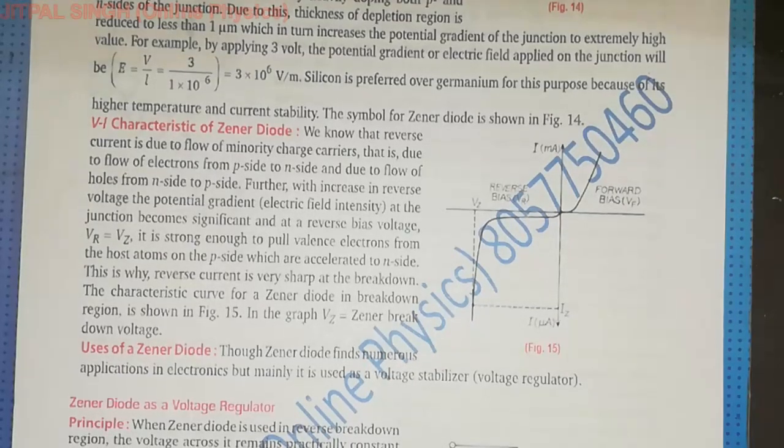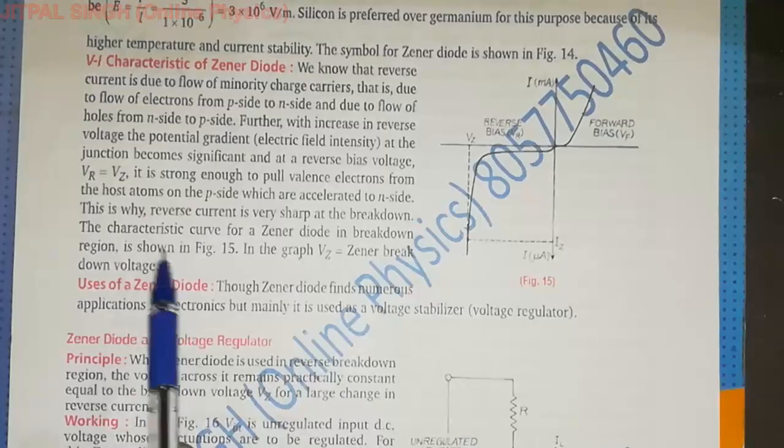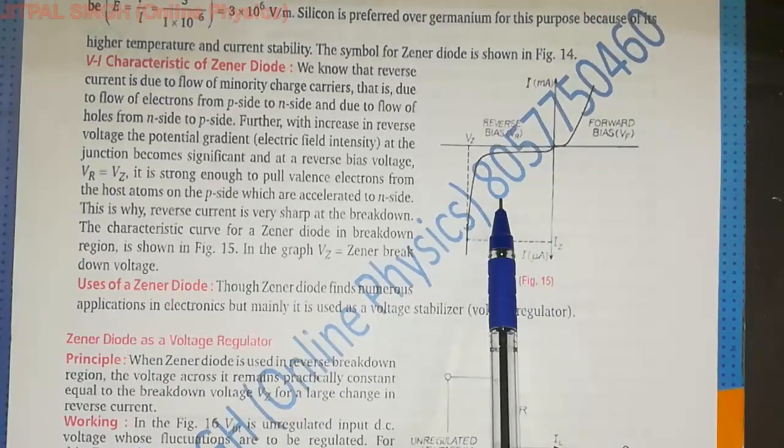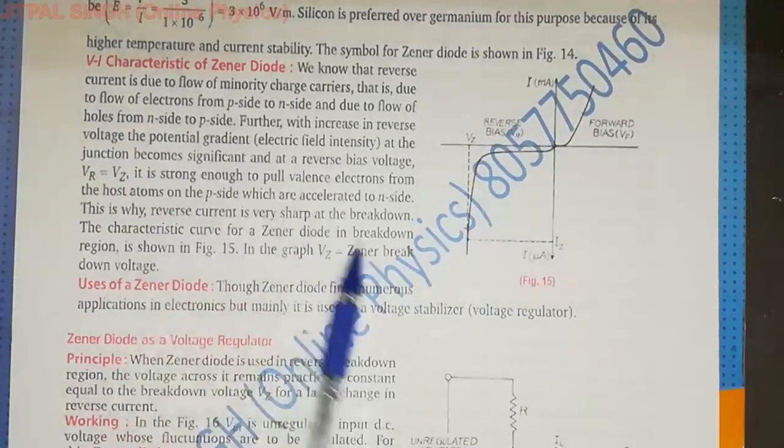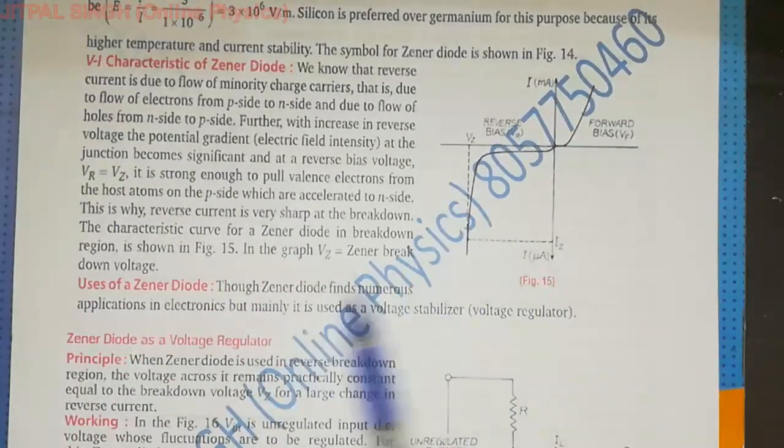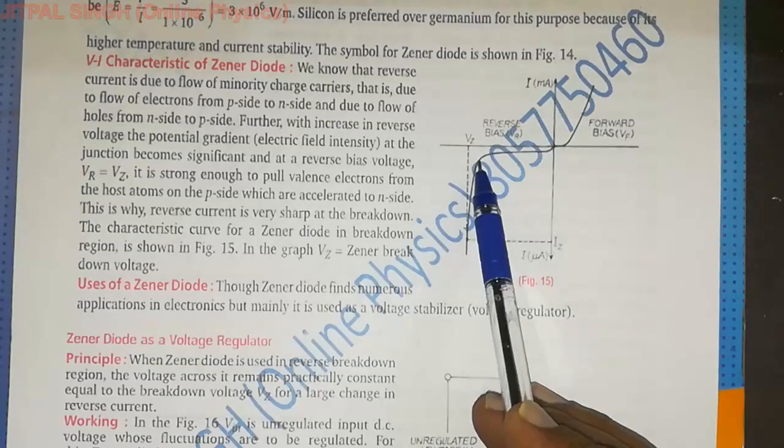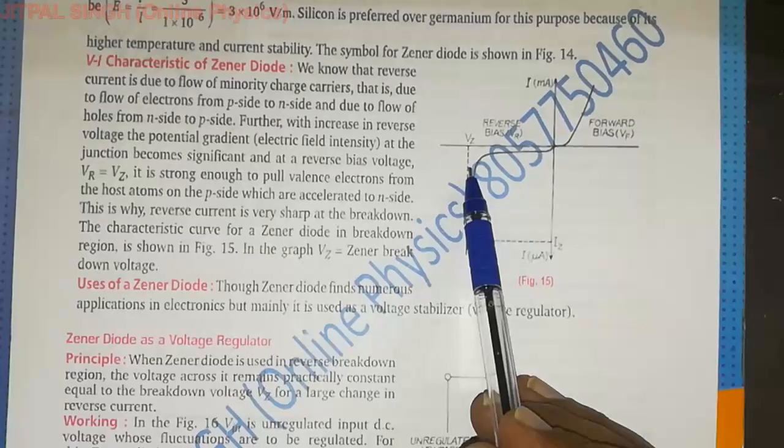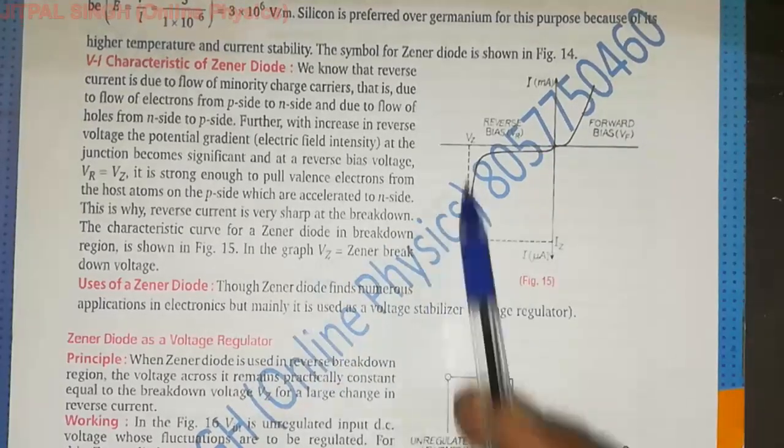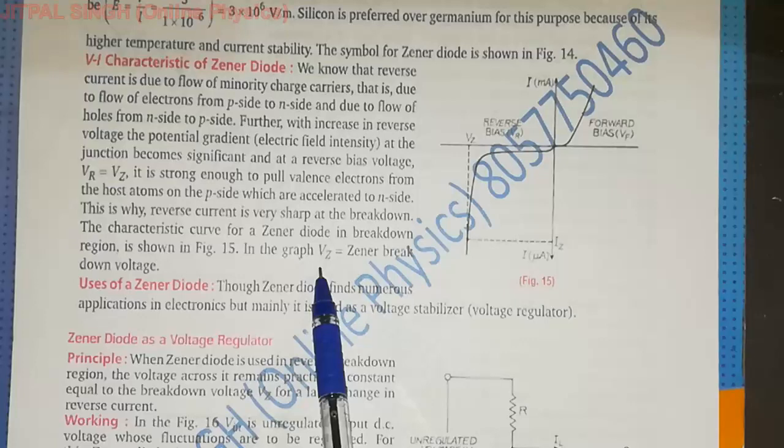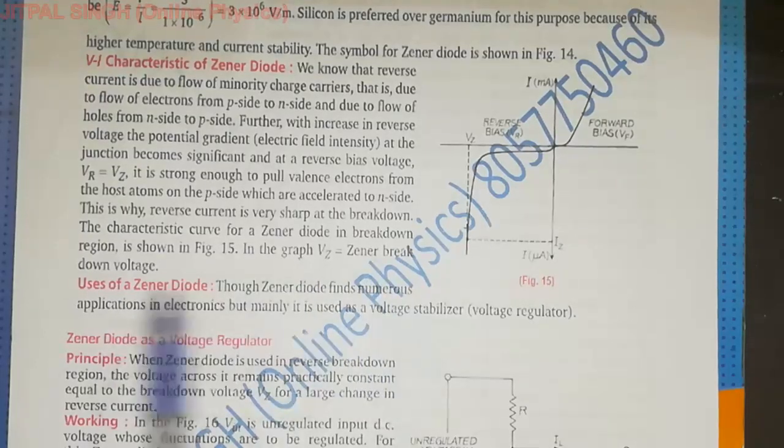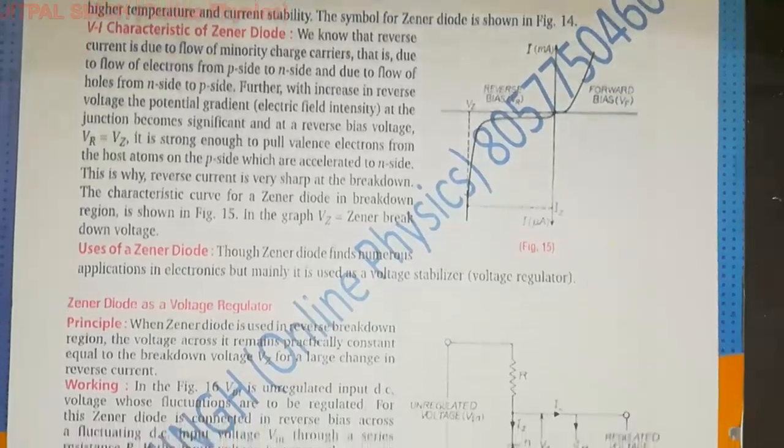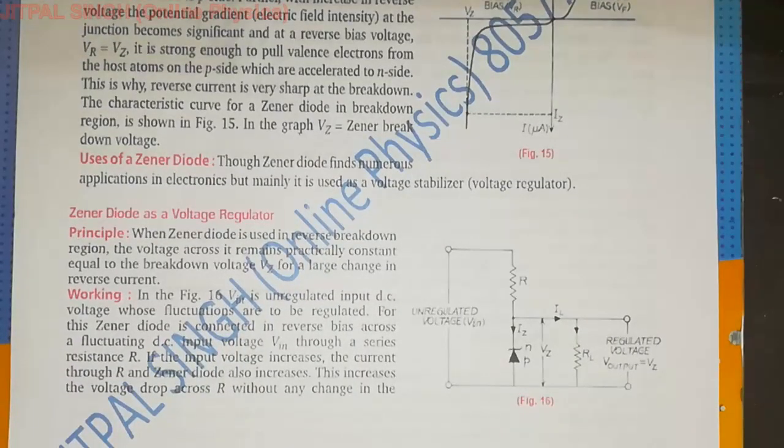Now, continuation of previous video. Here, this graph I have already explained. Go through this part. At this particular voltage, current increases suddenly but voltage remains constant. This is called Vz, the Zener breakdown voltage.